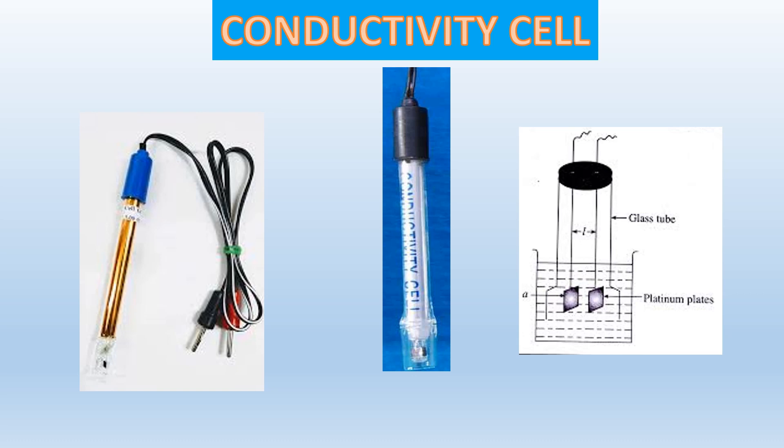As already explained in many videos about the conductivity cell, it has two platinum electrodes of half centimeter in size, one centimeter apart, so that they hold a volume of one centimeter cube of water. A schematic diagram is also shown.